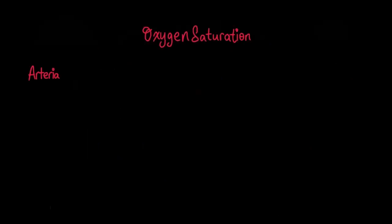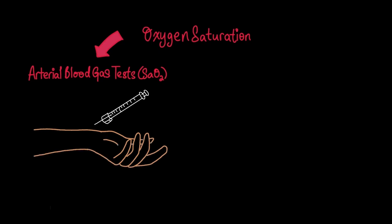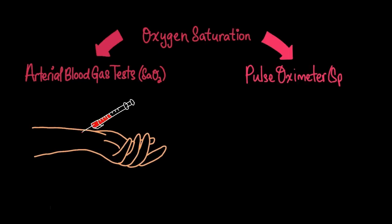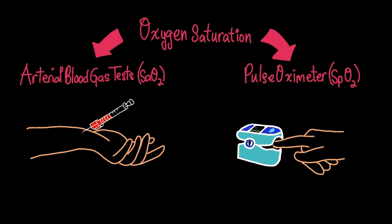Like every vital sign, we can monitor oxygen saturation either by diagnostic invasive arterial blood gas tests or the pulse oximeter, a nifty medical device that doesn't draw a drop of blood.